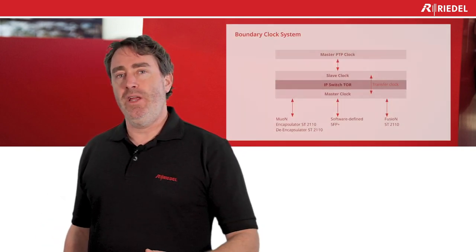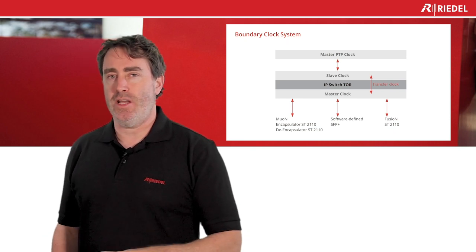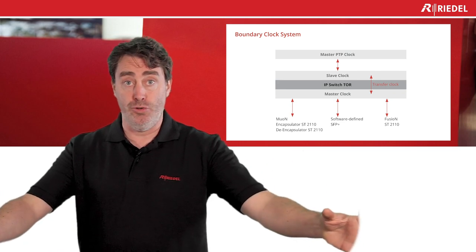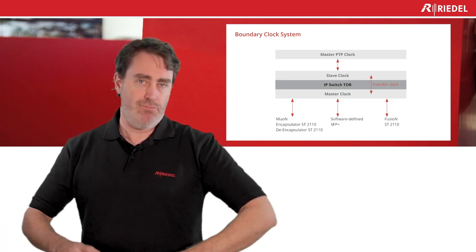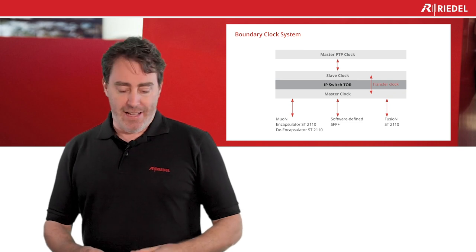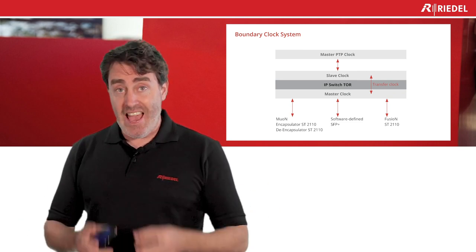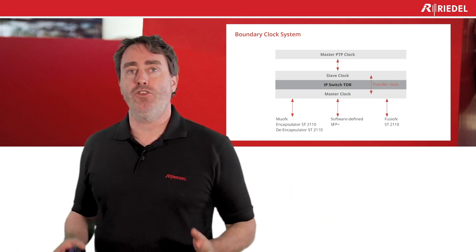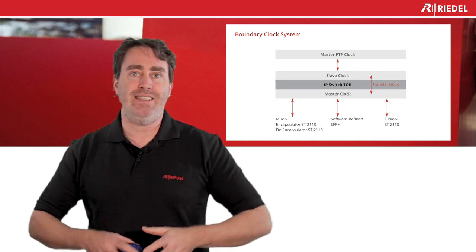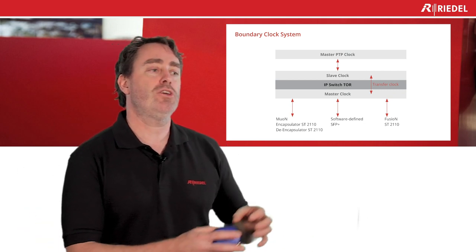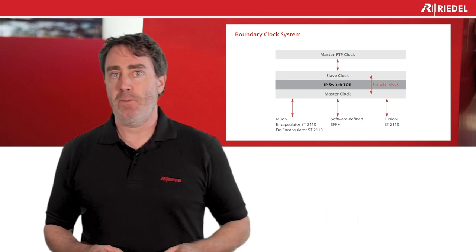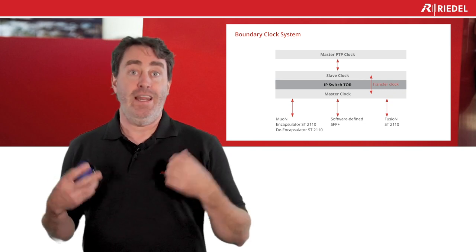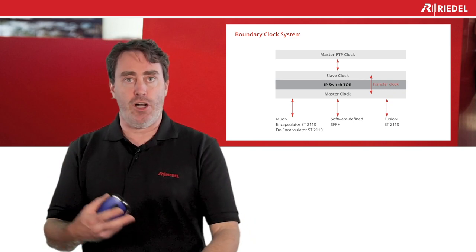The boundary clock aspect is really interesting. Instead of having one teacher talking to all thousand students, you have one grand teacher that will talk to different teachers, and then they go talk to their own class. So instead of being one to a thousand, it will be one to, say, 20 teachers, and those 20 teachers will each talk to 50 students. The interaction is faster, and the grandmaster communicates the clock to the switch.